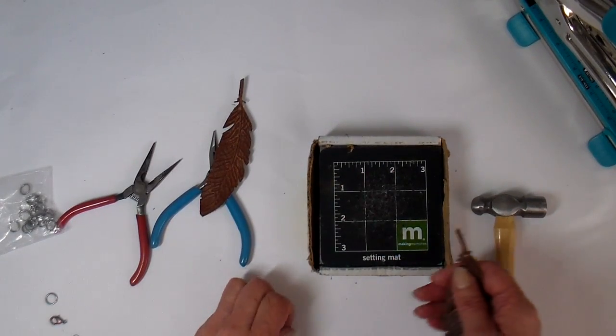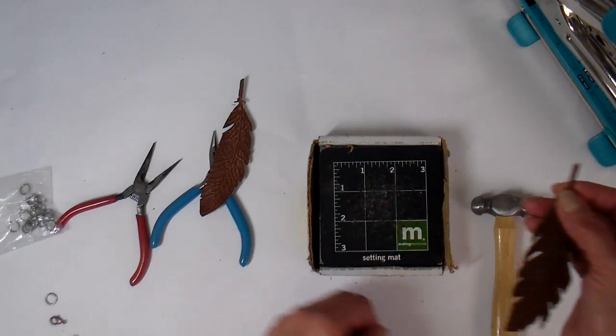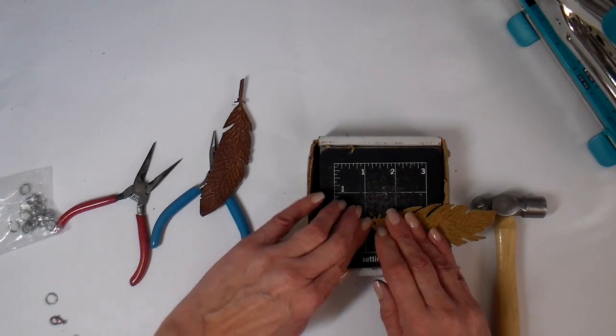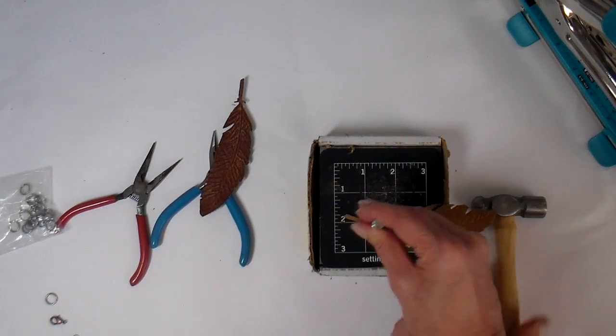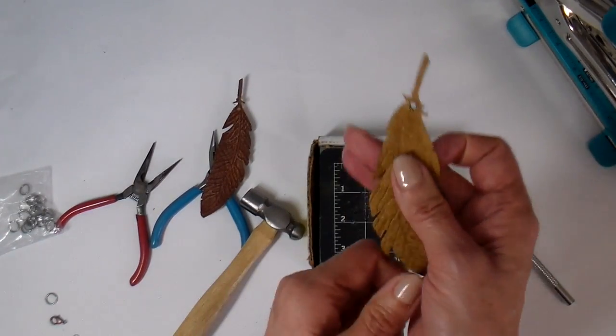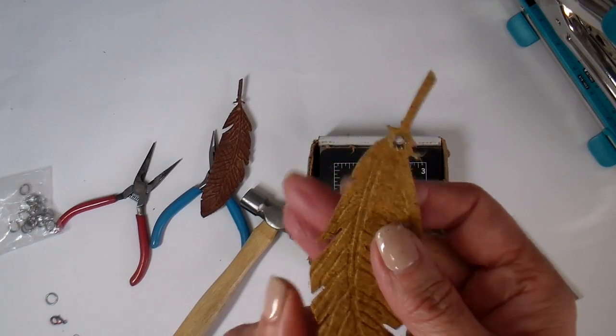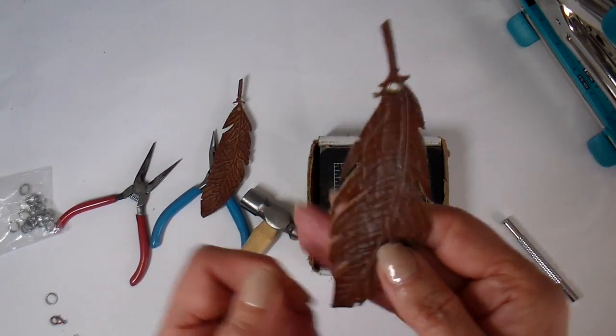And this is just such an easy, really an easy process. Just poking the little eyelet in the hole, turning it over, and then using the setting tool and just giving it a little whack. And there's the back of it and the front, all finished off very nicely.